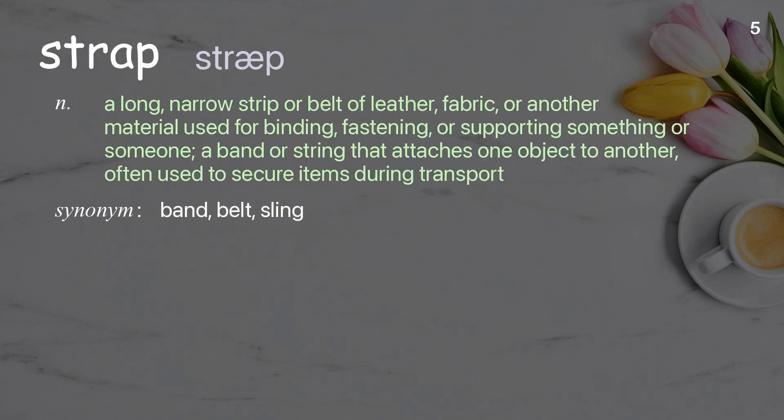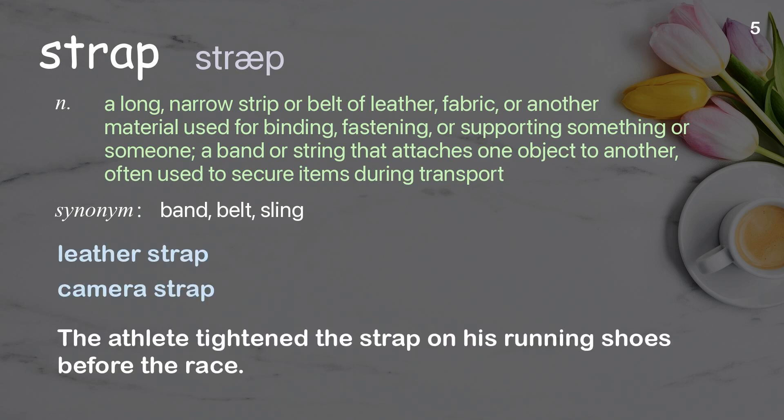Strap: A long, narrow strip or belt of leather, fabric, or another material used for binding, fastening, or supporting something or someone. A band or string that attaches one object to another, often used to secure items during transport. Examples: Leather strap. Camera strap. The athlete tightened the strap on his running shoes before the race.